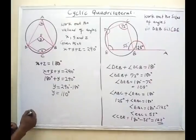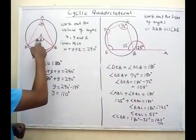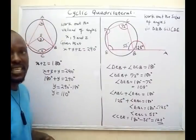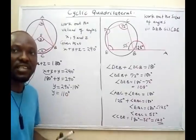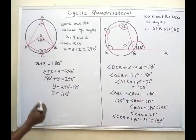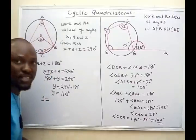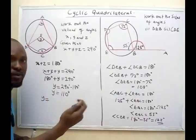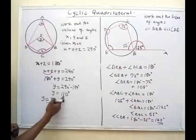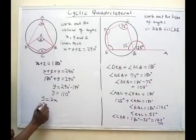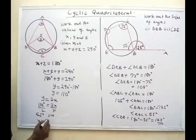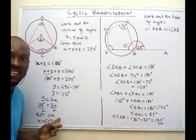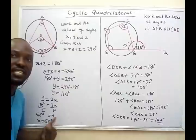Now, angle Y is at the center and angle X is at the circumference. I want you to watch my previous video on the angle at the center theorem: the angle subtended at the center is twice that at the circumference. So the angle at the center Y equals twice the angle at the circumference X. Plugging in 110 degrees: 110 degrees equals 2X, so dividing both sides by 2 gives X equals 55 degrees. The geometric reason is that the angle subtended at the center is twice that at the circumference.